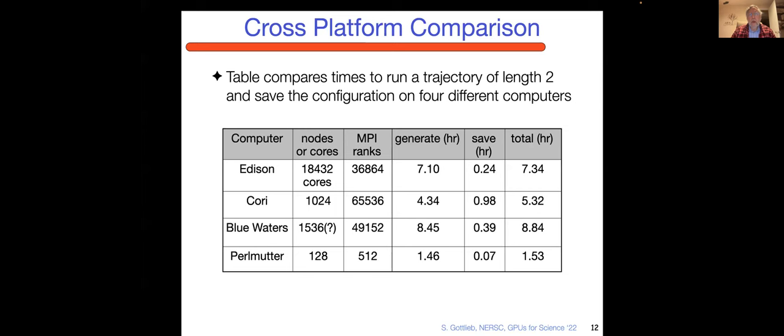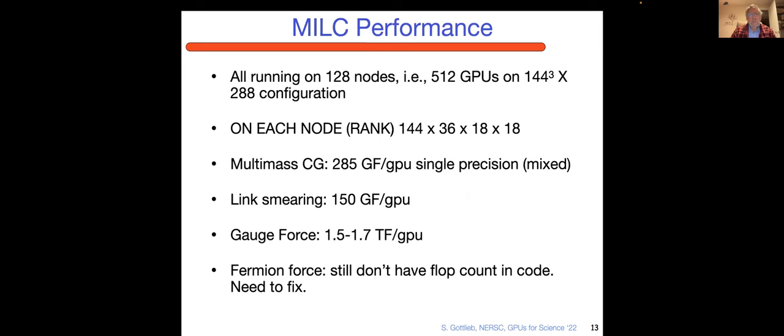Here I have a cross platform comparison for the lattice generation. Those four years of running were a combination of Edison, Cori, Blue Waters, and the red line was Perlmutter. What took from five and a half to almost nine hours is reduced to 1.53 hours on Perlmutter, which is very nice. This doesn't take into account how many nodes there are so you could multiply out node hours. The question mark on Blue Waters is because I can't remember what we did about hyper threading there. You'll get at least within a factor or two of node hours.